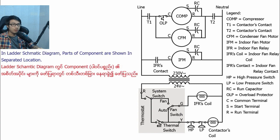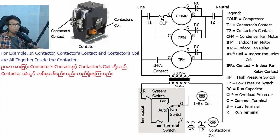In this ladder schematic diagram, parts of components are shown in separate locations. In the compressor, there are three terminals.